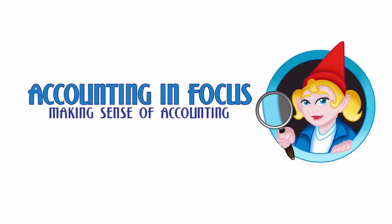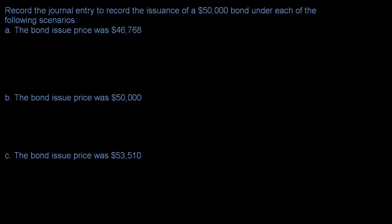Welcome to Accounting in Focus. In this video, we are going to record the journal entries needed to record the issuance of a $50,000 bond under each of the following scenarios. These are actually the numbers from the calculation video on the bonds. If you did not watch that video and you're wondering where these numbers came from, you might want to go back and watch the one on calculating the bond issue price.